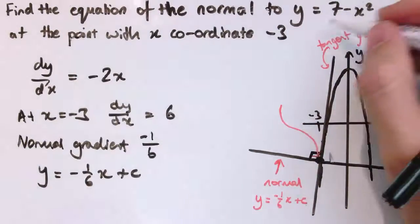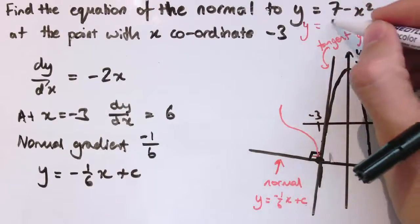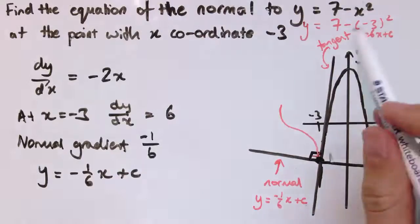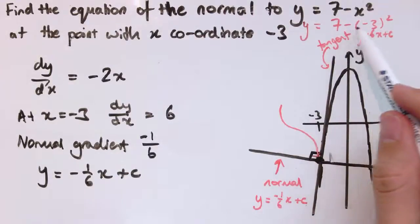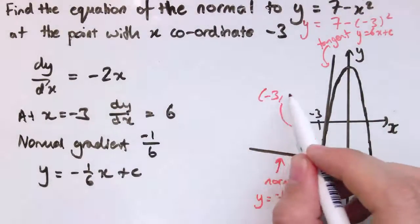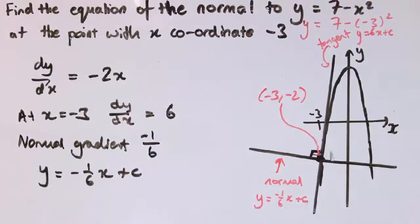So if I put in minus 3 into here for x, I'll get 7 minus minus 3 squared, being careful with the negatives here, it's 7 minus minus 3 squared, so that's 7 minus 9, that's minus 2. So this point has coordinates where x is minus 3 and y is minus 2. So when I substitute those values in here, that must make this work.